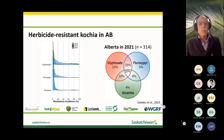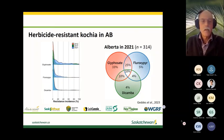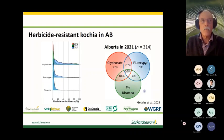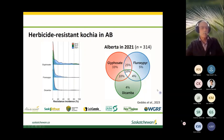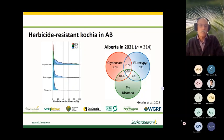Alberta surveys found fluroxypyr resistance in kochia. Interestingly, the crossover between fluroxypyr and dicamba resistance is not particularly high — about 44 percent of Alberta samples were resistant to fluroxypyr, about 28 percent to dicamba, and about 14 percent showed crossover between them. The mechanism behind this low crossover is not yet fully understood, though Charles Geddes is working to determine it.